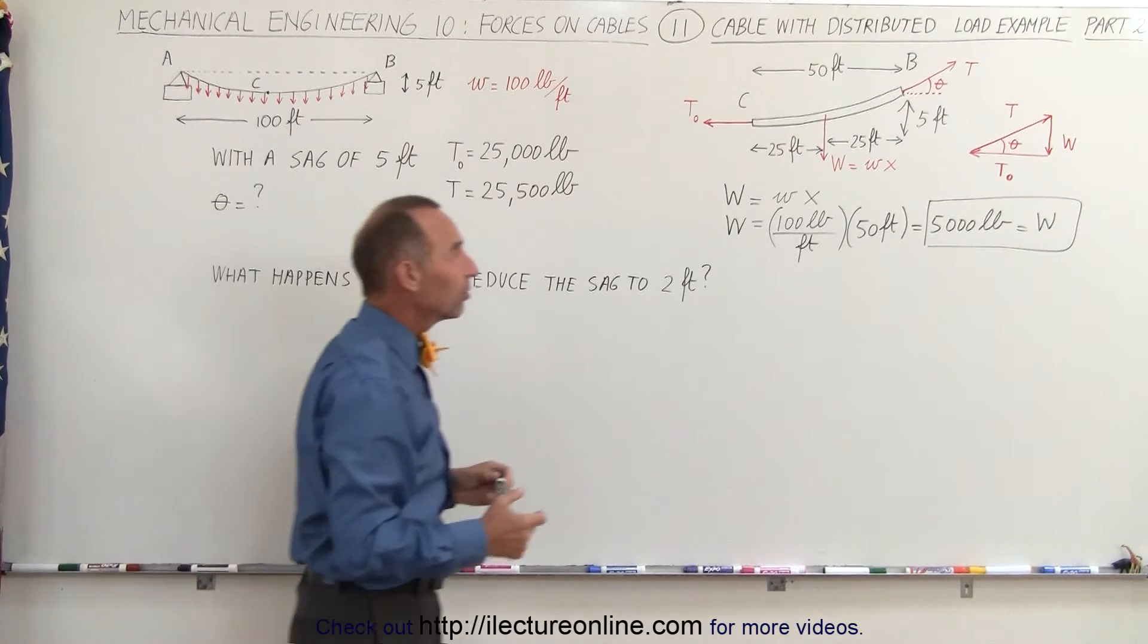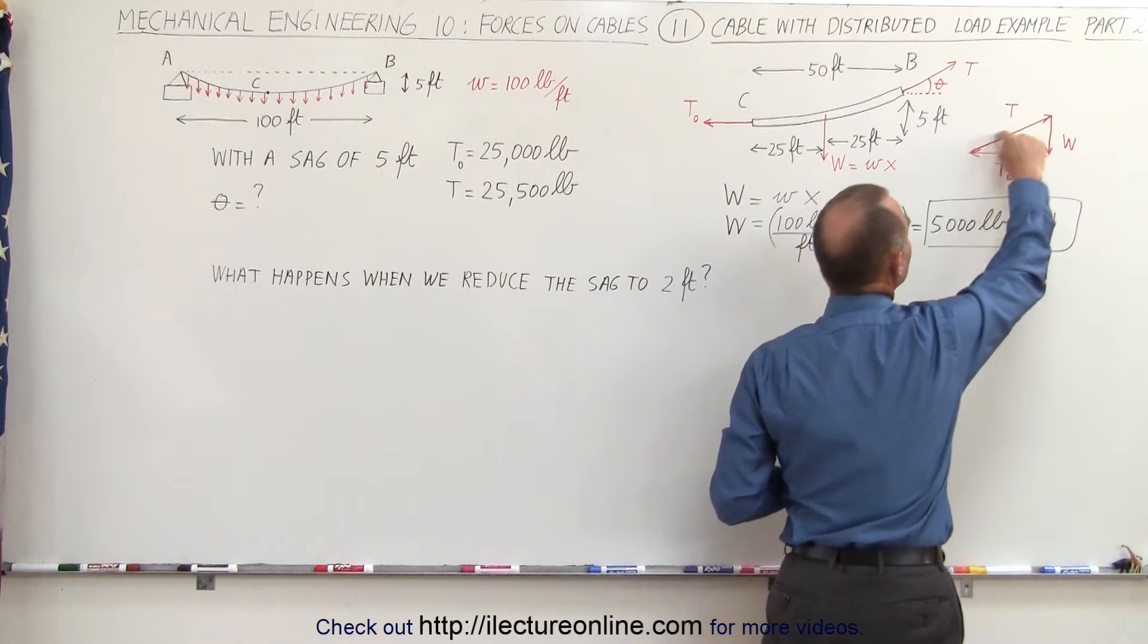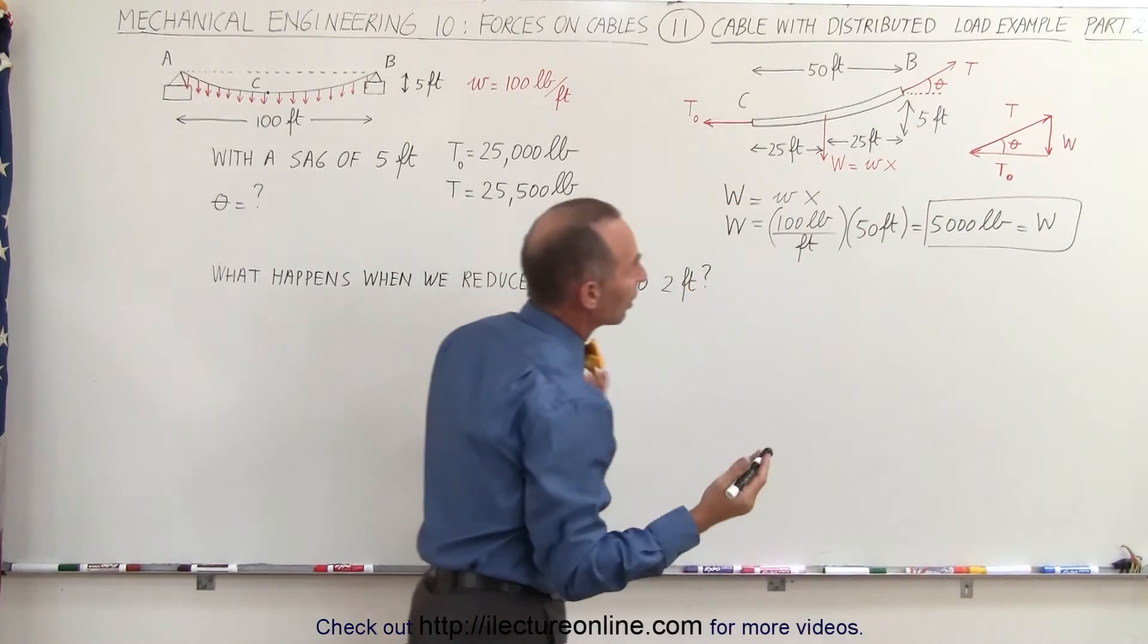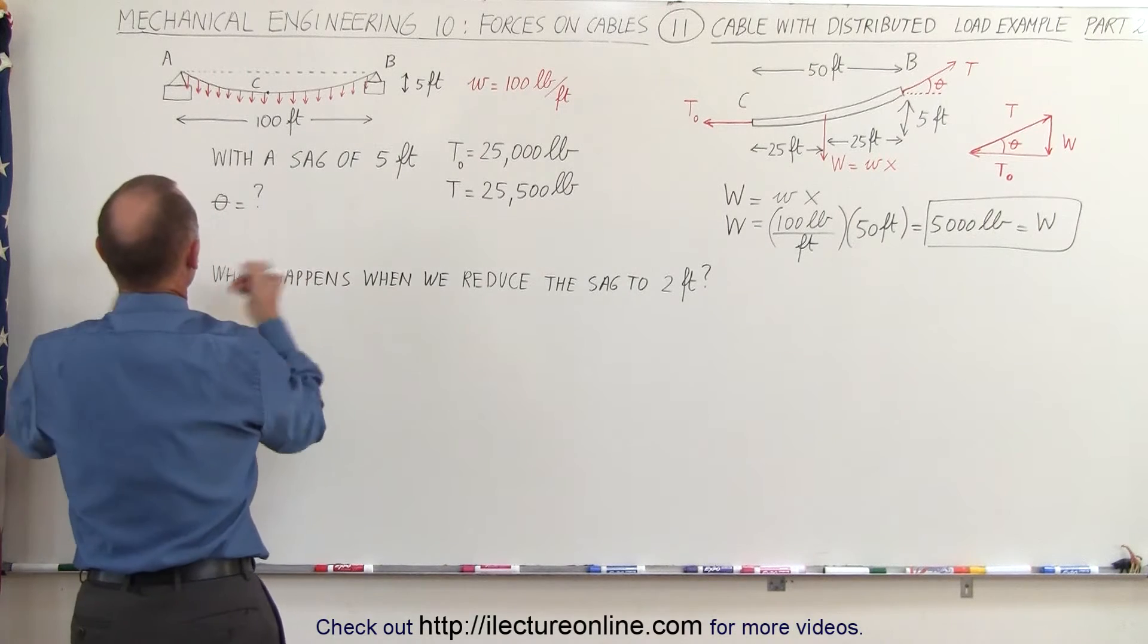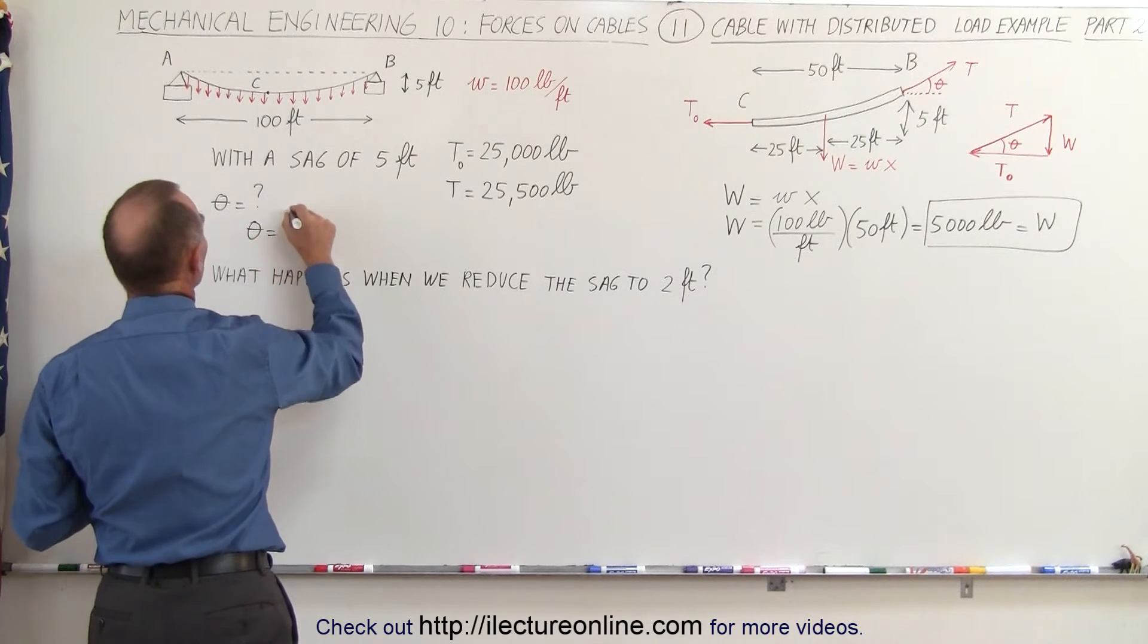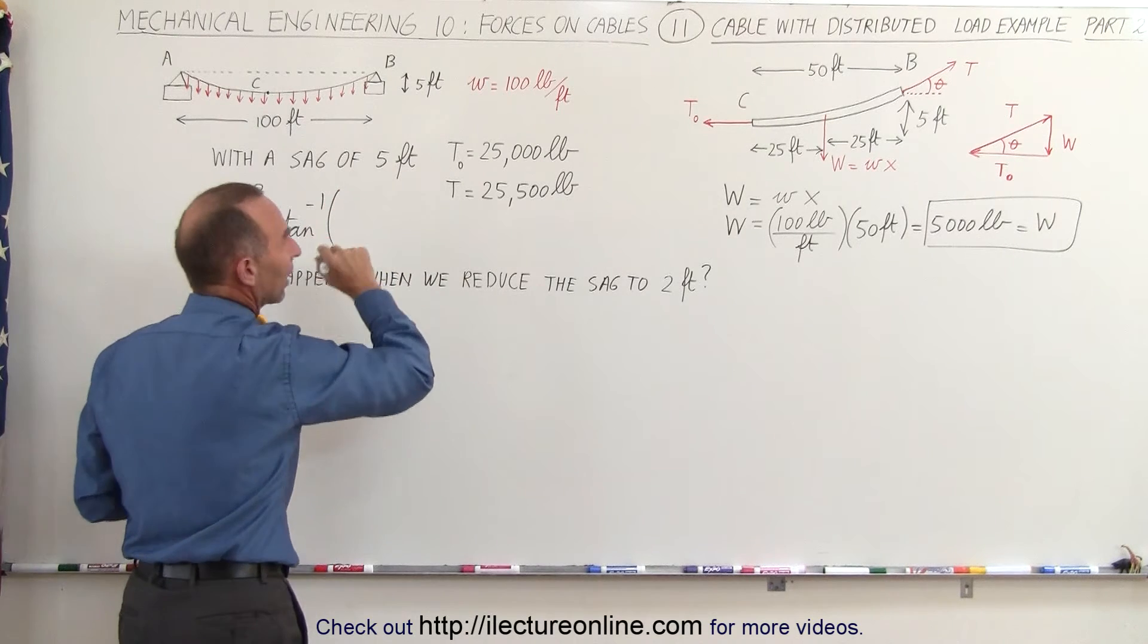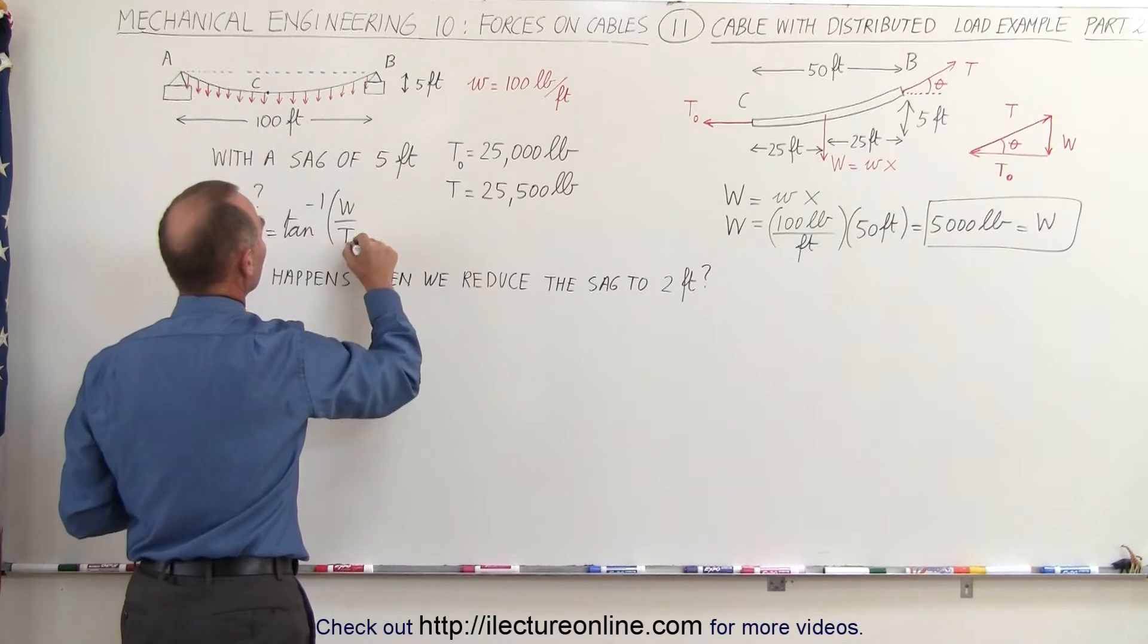First of all we can see at the triangle here that theta is the angle between the tension at B and the tension at the center, so we can see that we can probably use the tangent. We can say that theta is equal to the arc tangent, that would be the arc tangent of the opposite side divided by the adjacent side.